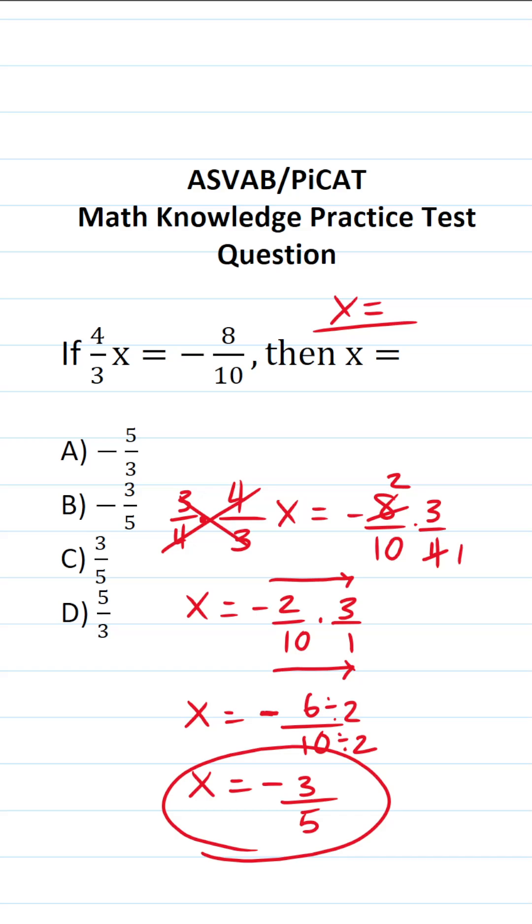So x in this case is going to be negative three fifths, which is answer choice B of course.